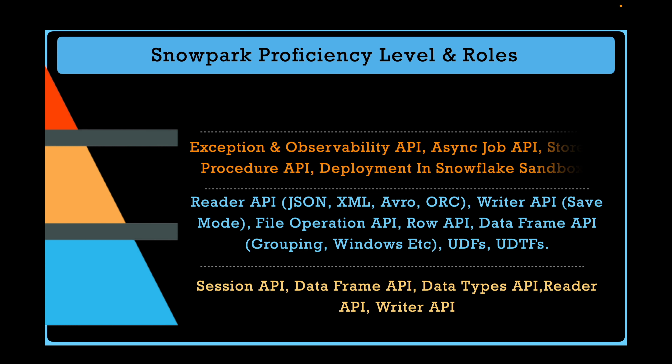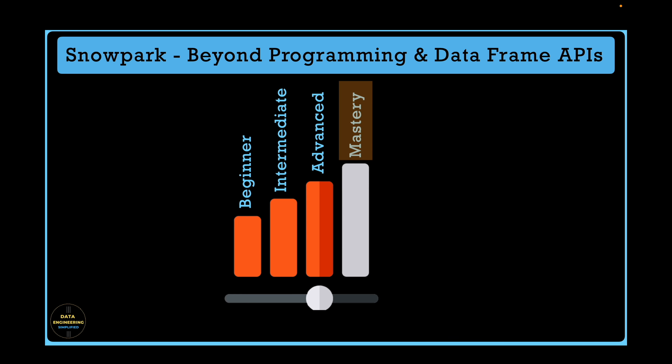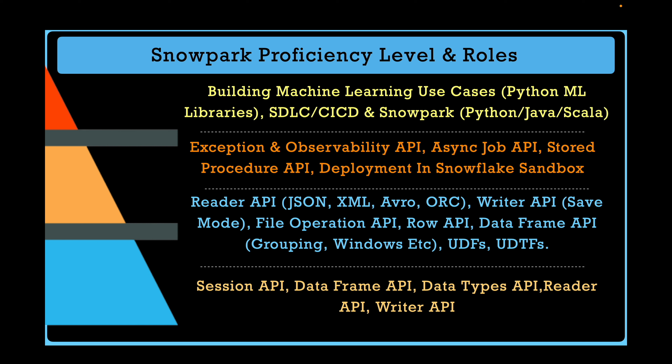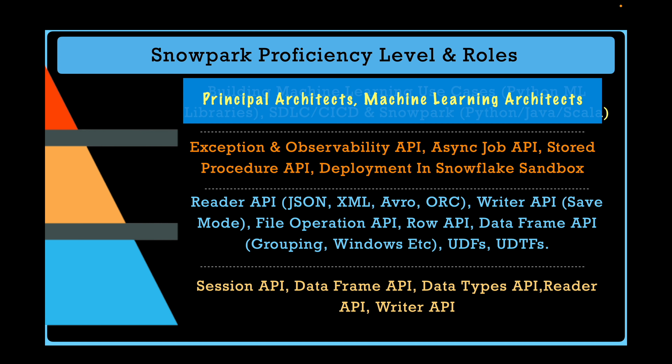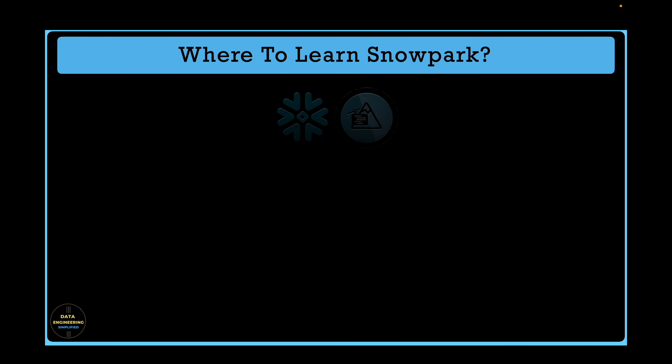At the advanced level proficiency, you must have a good knowledge around exception handling and observability API, async job API, stored procedure API, and working knowledge with Snowflake sandbox and deployment of Snowpark programs within the Snowflake cloud environment. These skills are expected from data leads, data architects, and data engineering managers who are managing production-grade Snowflake-Snowpark systems. And finally, if you want mastery level proficiency, the expectation includes proficient knowledge of building machine learning use cases using Python ML libraries supported by Anaconda packages, SDLC and CI/CD implementation with Snowpark using Python, Java, or Scala APIs, and a strong understanding of operational efficiencies with Snowpark optimized virtual warehouses. These skills are expected from roles like principal solution architect and machine learning architect.